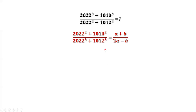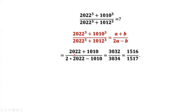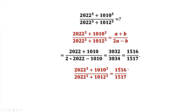This is the result from the previous page. What is A? A is 2022. What is B? B equals 1010. We just plug in those two numbers for A and B. Simplify. We have 3032 divided by 3034. Continue to simplify: equals 1516 over 1517. This is the result.